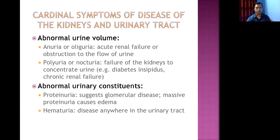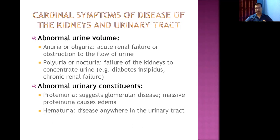To quickly revise the cardinal symptoms of kidney and urinary tract diseases: loin pain radiating to the groin (mainly upper urinary tract disorders), hematuria and proteinuria, abnormal urinary volume such as oliguria, anuria, polyuria, or nocturia. In predominantly lower urinary tract disorders — especially in older males over 60–65 — the patient may present with hesitancy, dribbling, urgency, and frequent urinary tract infection.